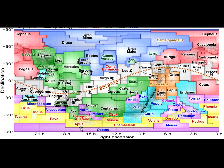All right, so these are the 88 constellations — just a little sneak preview. This thing called the ecliptic, which I'm about to explain: you'll notice that the constellations that line up with the ecliptic are probably the ones you've heard of. These are the constellations of the zodiac, and we'll say a few words about that in a second.